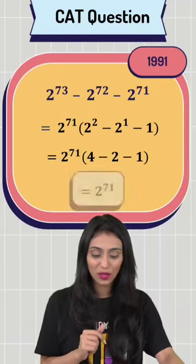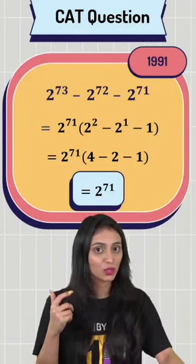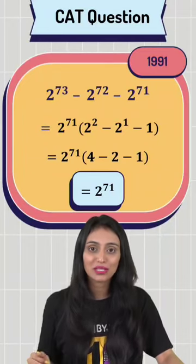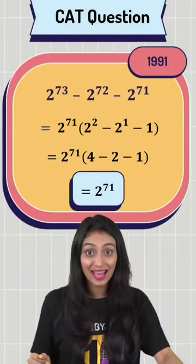Simply we will take 2 to the power 71 common. We get 2 square minus 2 to the power 1 minus 1. Simplify the bracket. You get 2 to the power 71 answer at the end.